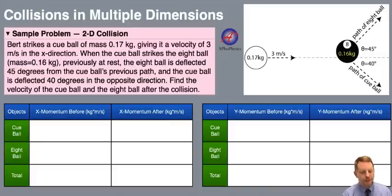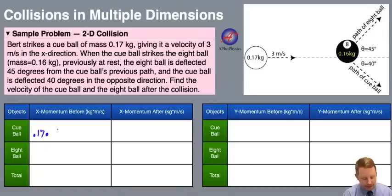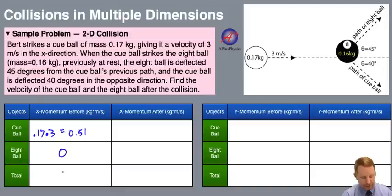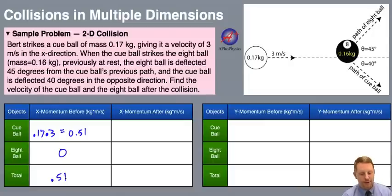First, the cue ball before the collision has a mass of 0.17, so 0.17 times its velocity of 3 meters per second gives us an x momentum before of 0.51 kilogram meters per second. The 8 ball is at rest, so its momentum beforehand is 0, and the total momentum before the collision is 0.51 kilogram meters per second.